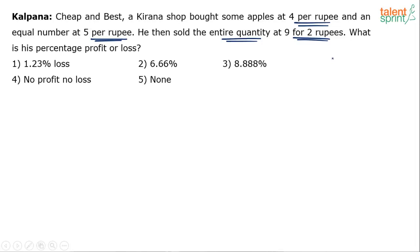Try this — see what happens if you actually get no profit, no loss, or anything else. Let's assume he has bought a total of 20 apples in the first case and 20 apples in the second case, so total apples bought are 40.